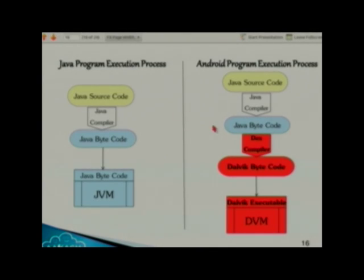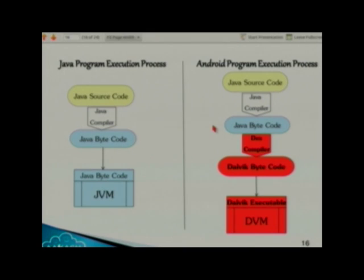This slide shows the comparison between Java program execution and Android program execution. On the left-hand side: we have Java source code, the Java compiler compiles it and we get Java bytecode, and then this executable code runs on the Java virtual machine.